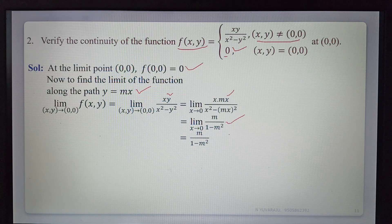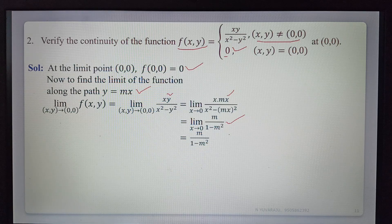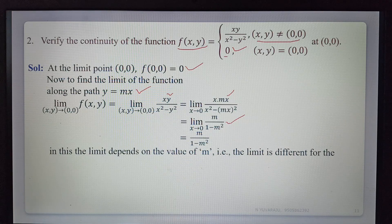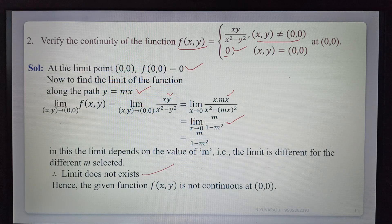Selecting different values of m gives different limit values. The limit is not unique — it depends on the value of m. Since different paths give different limits, the limit does not exist. Therefore, the given function is not continuous at (0,0).